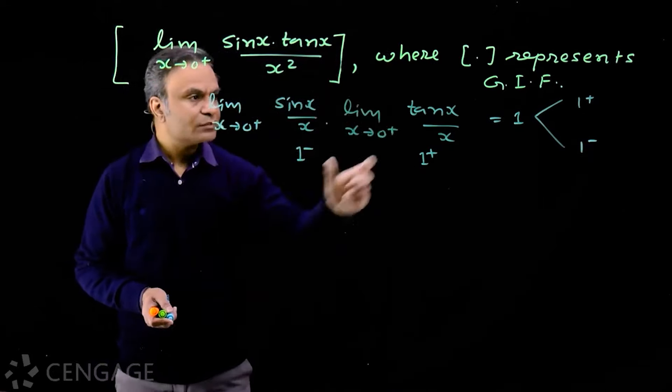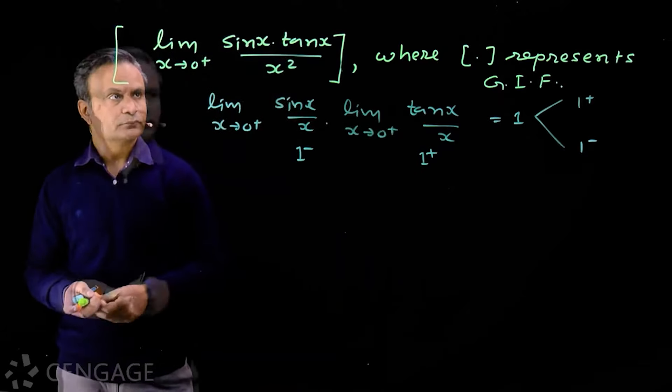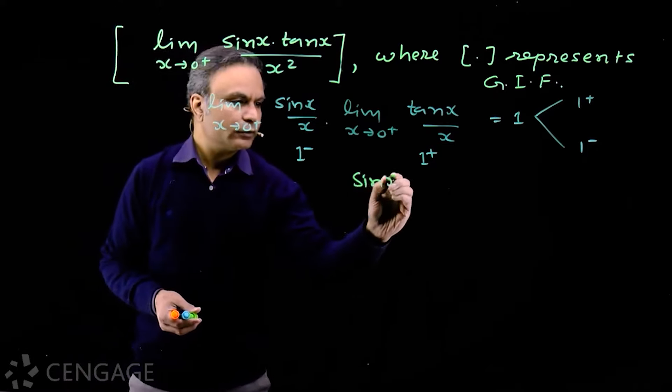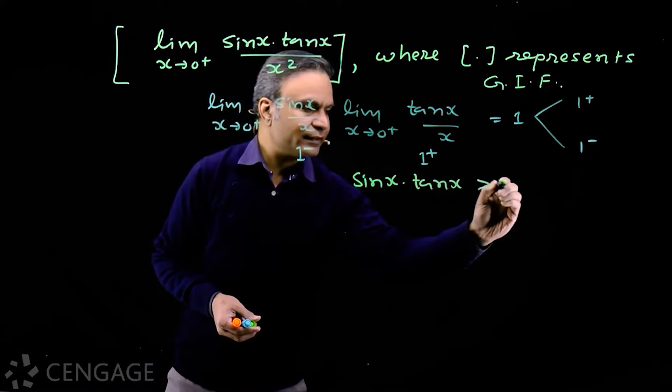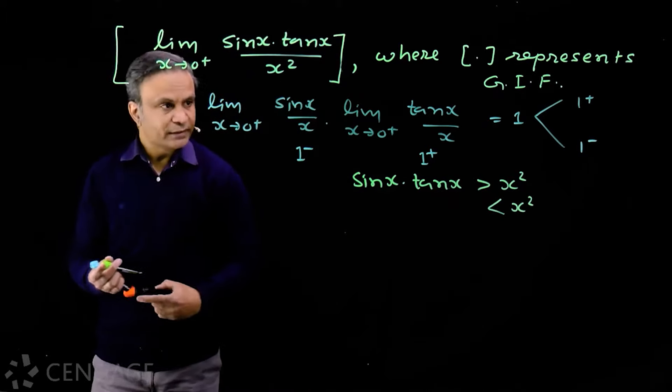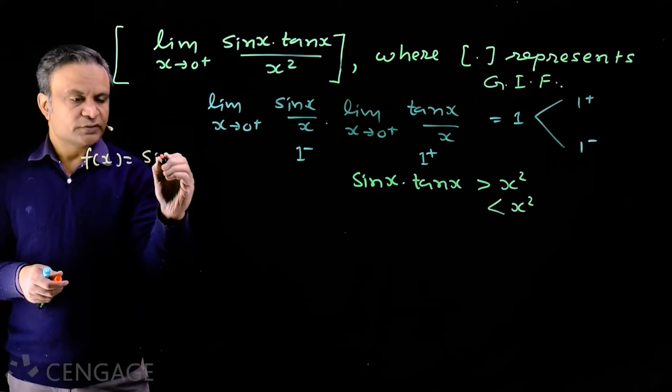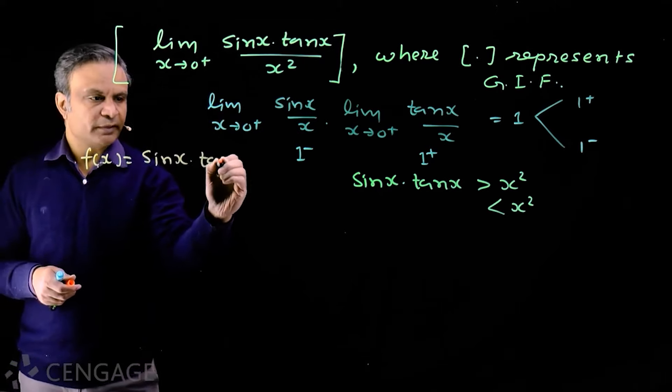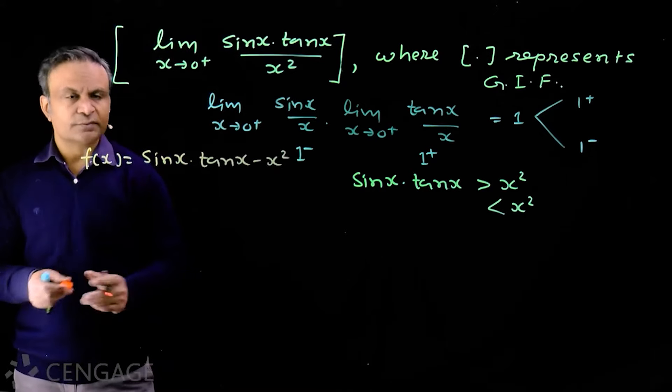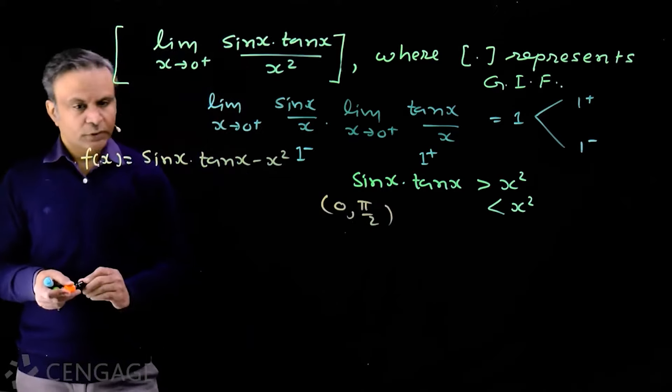Now how to check whether this limiting value is more than 1 or less than 1? For that we need to check whether sin x multiply by tan x is greater than x square or less than x square. So what we do, we consider function f(x) which is sin x multiply by tan x minus x square, and we check the nature of this function in some small interval, say 0 to pi by 2.